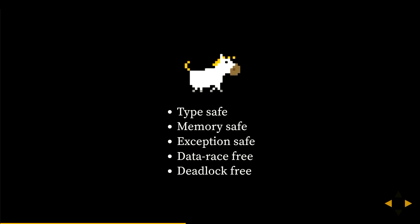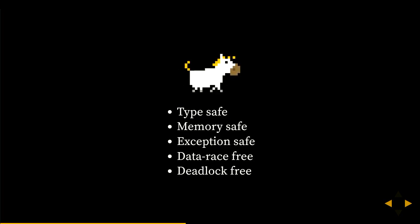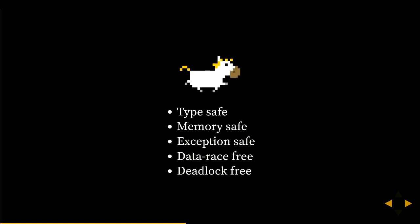Thanks to the reference capabilities design, Pony is unique in being a native-performance compiled language that is type safe, memory safe, exception safe — with checked exceptions similar to Java — data race free (the compiler ensures no data races at compile time, like Rust), and deadlock free. Since Pony relies solely on asynchronous message passing for thread communication, there are no locks and therefore no way to deadlock.